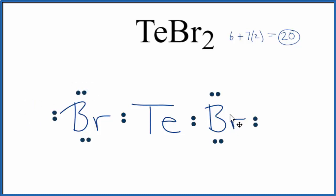So far we've used 16 valence electrons. We have 20 for the TeBr2 Lewis structure. So we'll just complete the octet on that central Te atom there. We've used 20 valence electrons and each atom has an octet. This is the Lewis structure for TeBr2.